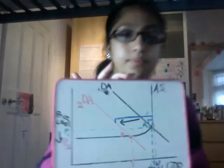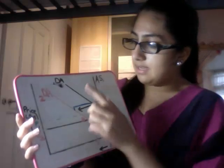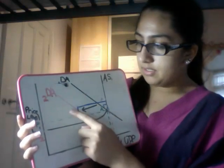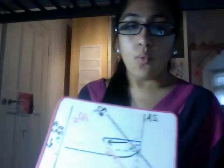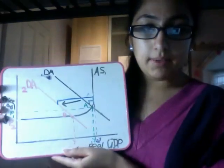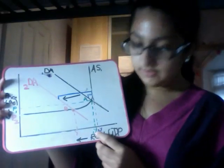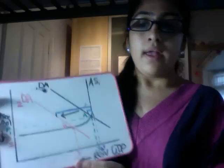Looking at the diagram: this is aggregate demand 1 and aggregate demand 2 — as you can see, it has fallen. Economic growth falls, contracting from Y1 to Y2. Why? If consumers are demanding less, firms produce less, there is less GDP and less production, so we have less economic growth. Price level has also fallen from P1 to P2, because there is less pressure on goods and services.